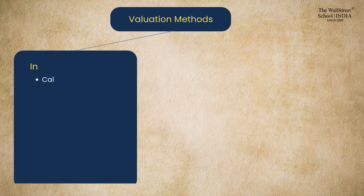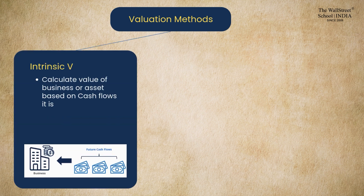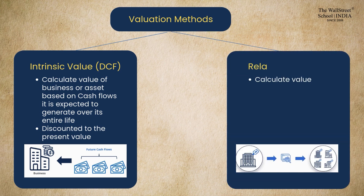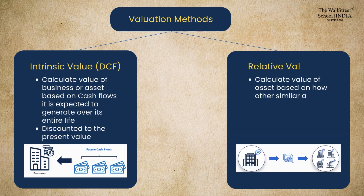Method number one: DCF valuation, or Discounted Cash Flow valuation. This method is based on the company's future cash flows, growth potential, etc. Method two: relative valuation, which compares a company's valuation multiples to its industry peers.